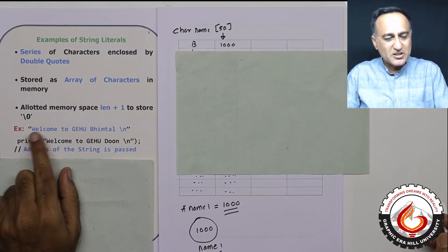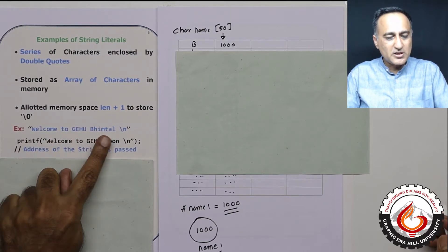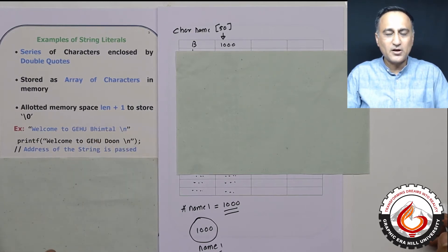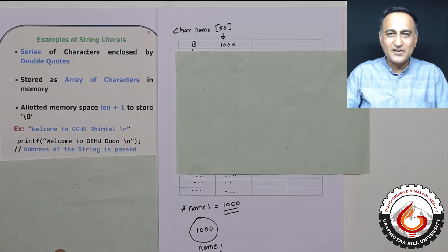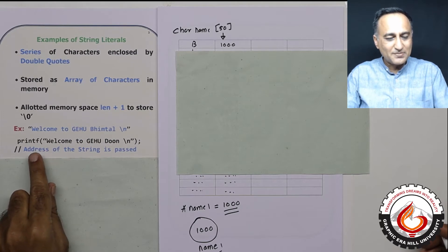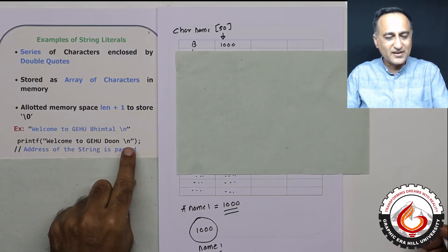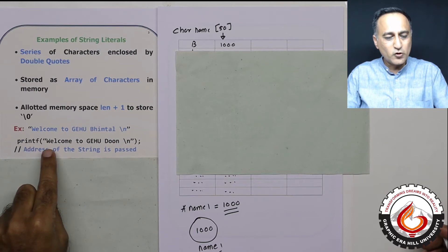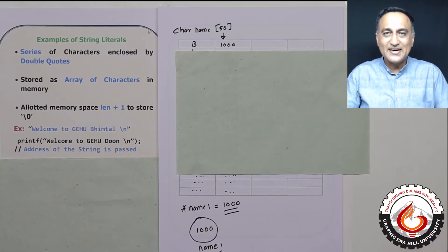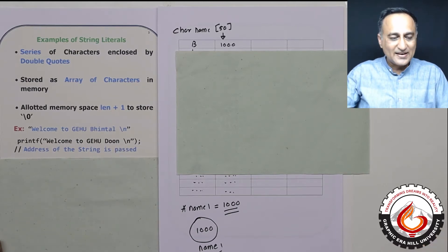This particular message in double quotes, "welcome to gehu Bhimtal" ending with a newline character and a double quote is a perfect example of a string literal or an array of characters literal. If I have to print something like this, I can say printf, pass the string literal, and printf is going to be sent the address of w. Starting from w, it is going to print all these characters till it encounters a null character.